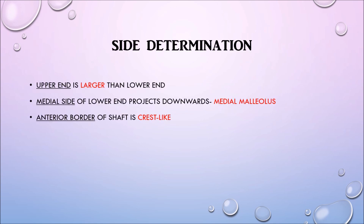For side determination we have to mention three points. First, the upper end is larger than the lower end. Second, the medial side of the lower end projects downwards as a medial malleolus. Third, the anterior border of the shaft is crest-like.